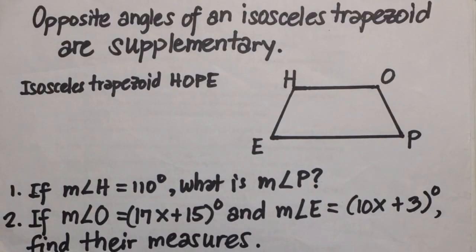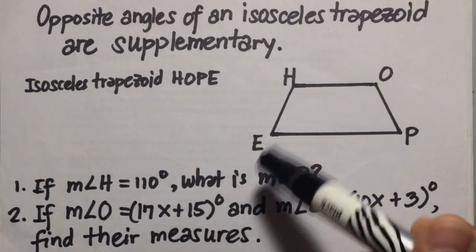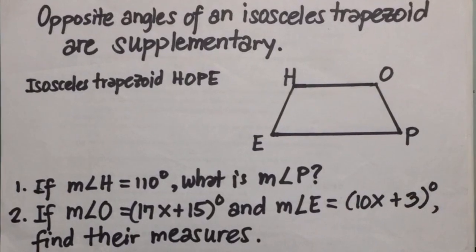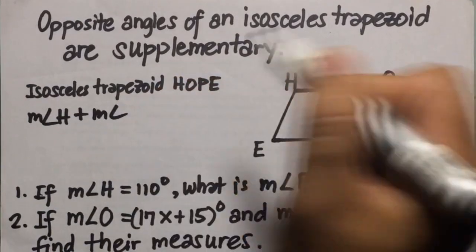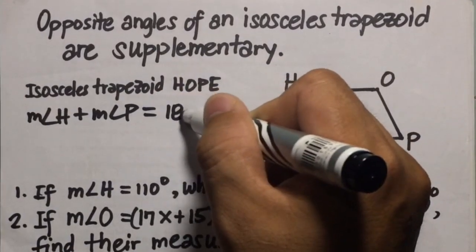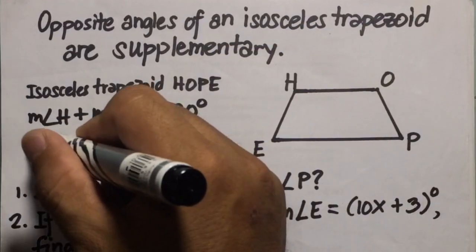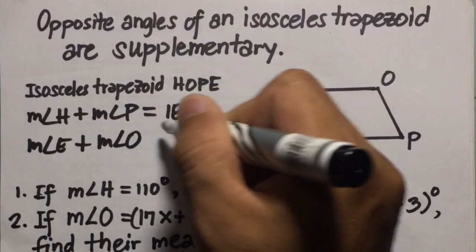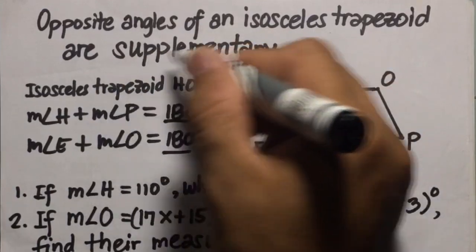The second theorem: opposite angles of an isosceles trapezoid are supplementary, meaning the sum of the angles equals 180 degrees. In isosceles trapezoid H-O-P-E, opposite angles are angle H and angle P, so measure of angle H plus measure of angle P equals 180 degrees. Similarly, measure of angle E plus measure of angle O equals 180 degrees.